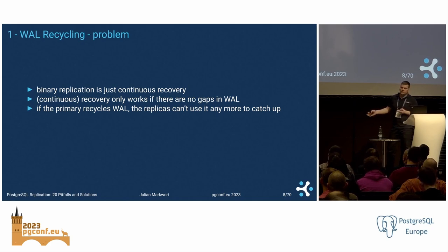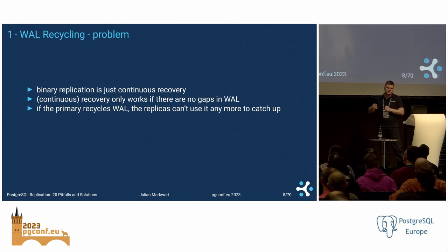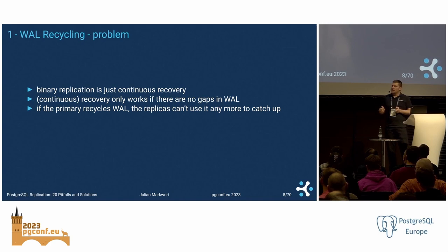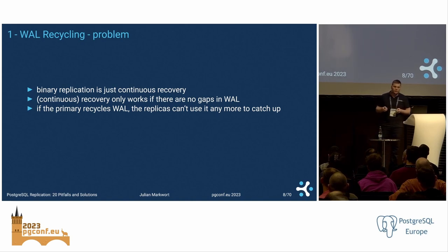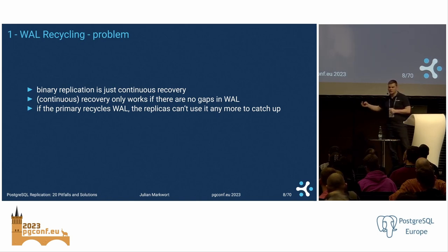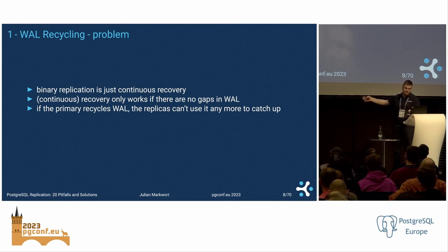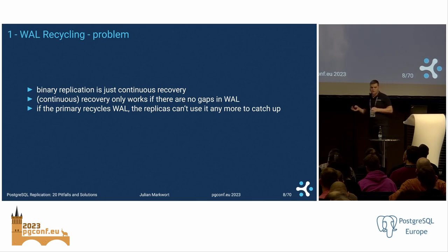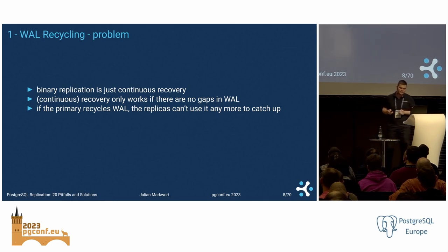The very first problem is WAL recycling. Binary replication is just continuous recovery — continuously applying WAL changes to keep up. Continuous recovery and crash recovery and point-in-time recovery only work if there are no gaps in the WAL. If the primary recycles any WAL that the replicas still need, the replicas can no longer replicate over this gap and cannot catch up.